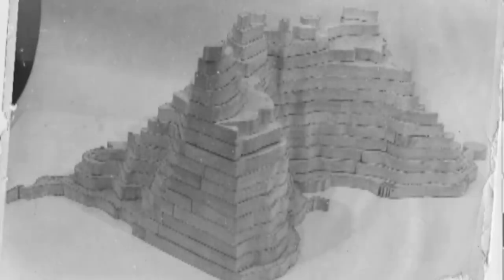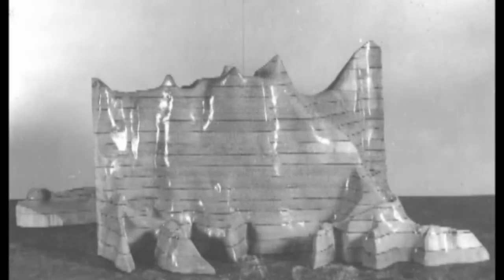They built wood forms to make a mirror image of the bottom topography of the sound, and then they poured concrete around the mold to create the model we see today.